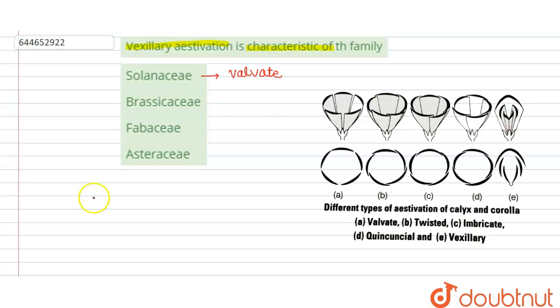Then when we come to the next, that is the Brassicaceae family. So the corolla in this family is described as the cruciform corolla and this family also has the valvate aestivation. So here we also have